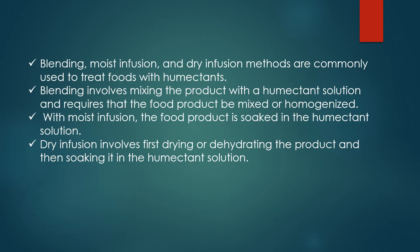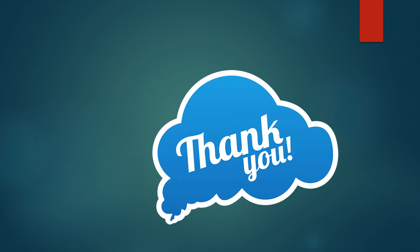The various methods used to treat food with humectants are blending, moist infusion, and dry infusion. Blending generally involves mixing the product with a humectant solution and requires that the food product be mixed or homogenized. Moist infusion involves soaking the food product in the humectant solution. Dry infusion involves first drying or dehydrating the product and then soaking it in the humectant.